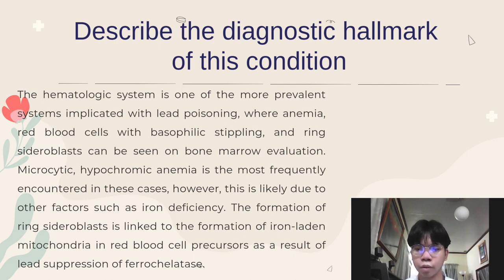What organ systems can be involved with this disorder? Lead can have serious consequences for children's health. At high levels of exposure, lead attacks the brain and can affect every organ system. Of all organ systems, the nervous system is the most affected target in lead toxicity, both in children and adults. The toxicity in children is of greater impact than in adults because their tissues — internal as well as external — are softer than in adults.